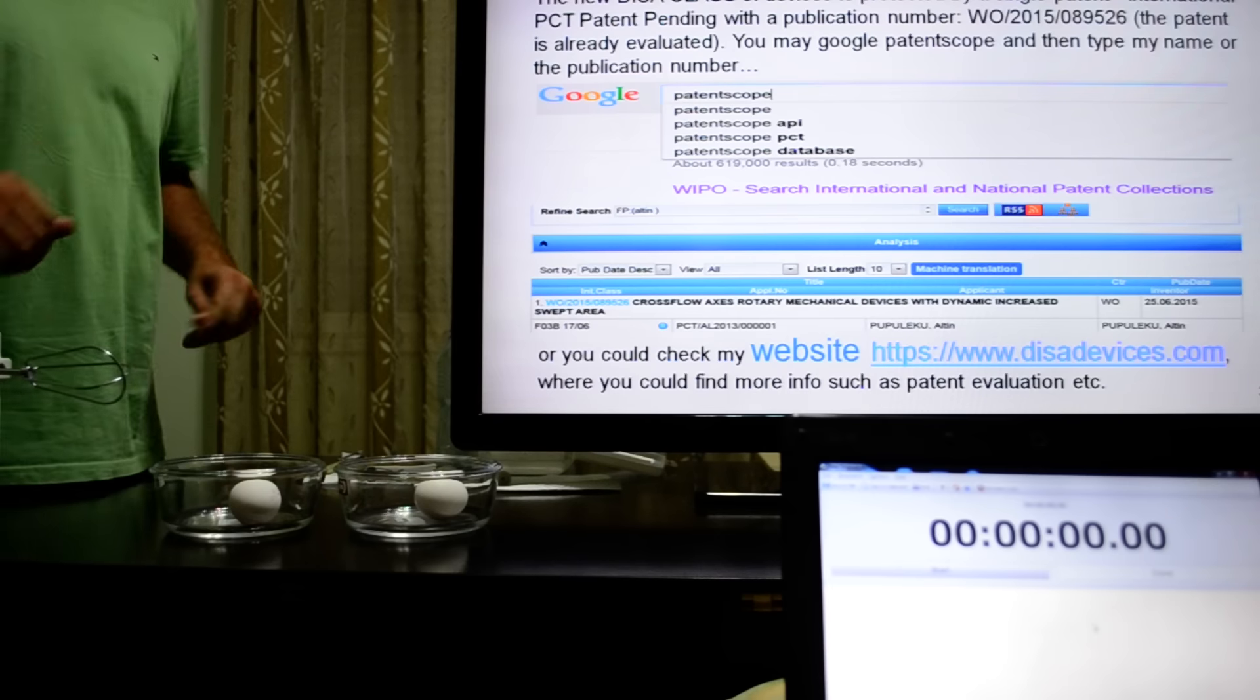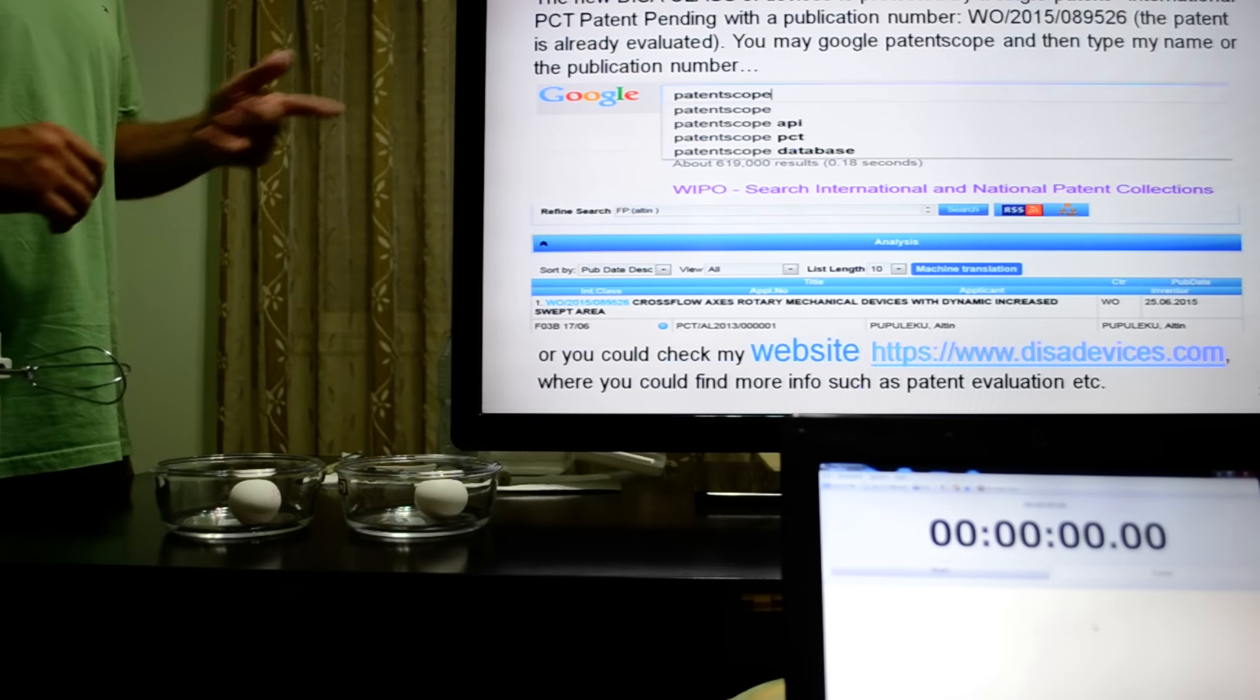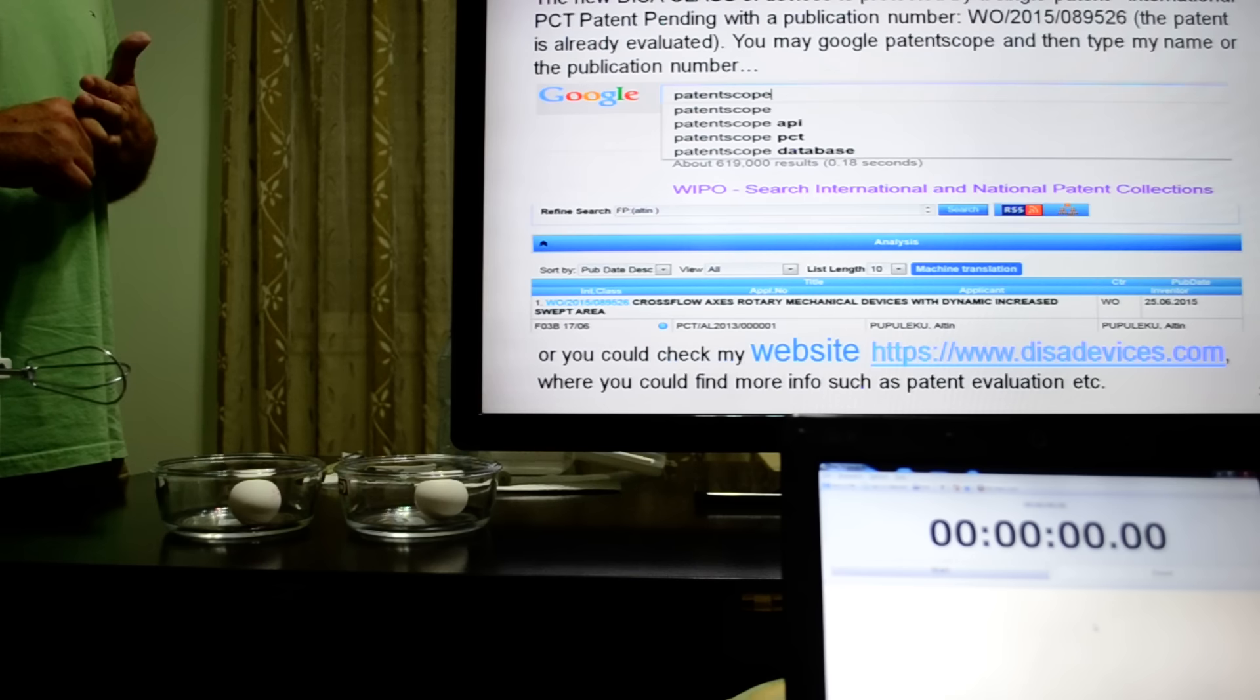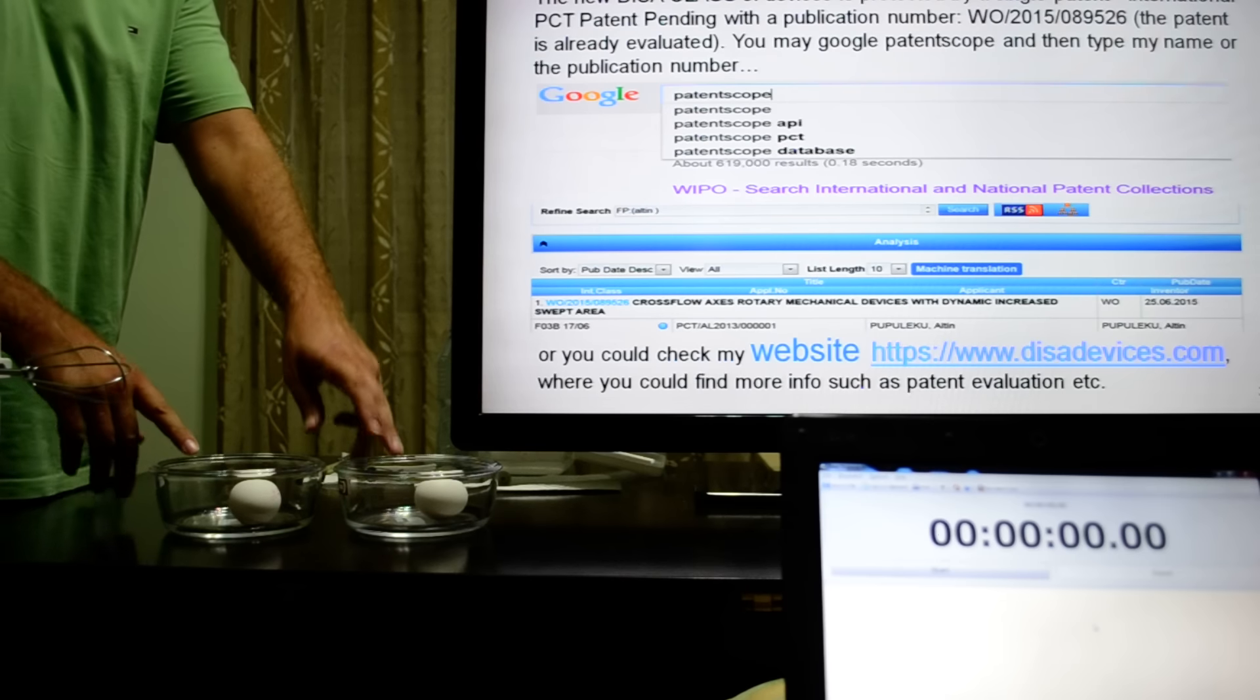The new DISA class of device is protected by a single patent, the International PCT patent with this publication number. You may Google patent scope and then type my name or the publication number, or you can check my website dissadevices.com where you can find more information such as patent evaluation, etc.